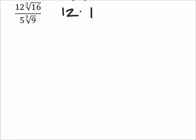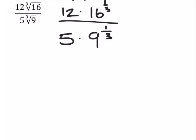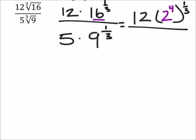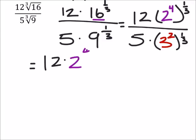12 times 16 to the power of 1 third, and I'm going to divide this by 5 times 9 to the power of 1 third. But, again, 16 and 9 they can be simplified down into other bases. So, for example, 16 is 2 to the power of 4. And then this is to the 1 third. 9 is just going to split up into 3 squared. So, this ends up being 12 times 2 to the power of 4 thirds, all divided by 5 times 3 to the power of 2 thirds.